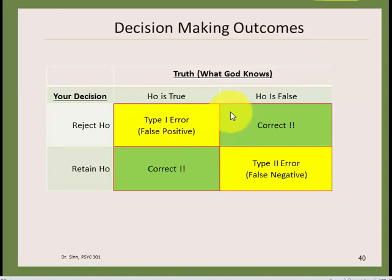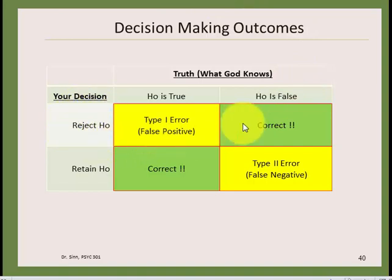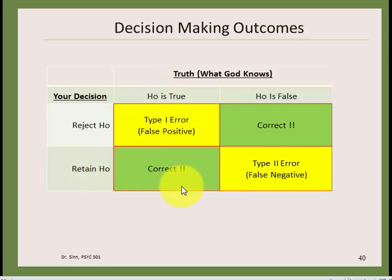Think of it as a table: your decision (reject or retain the null) versus the ultimate truth (whether the null is actually true or false). If you reject the null, you can only make a Type I error — either you're correct (null is really false) or you've committed a false positive. If you retain the null, you can only make a Type II error. Once you know your decision, that determines which type of error is possible.